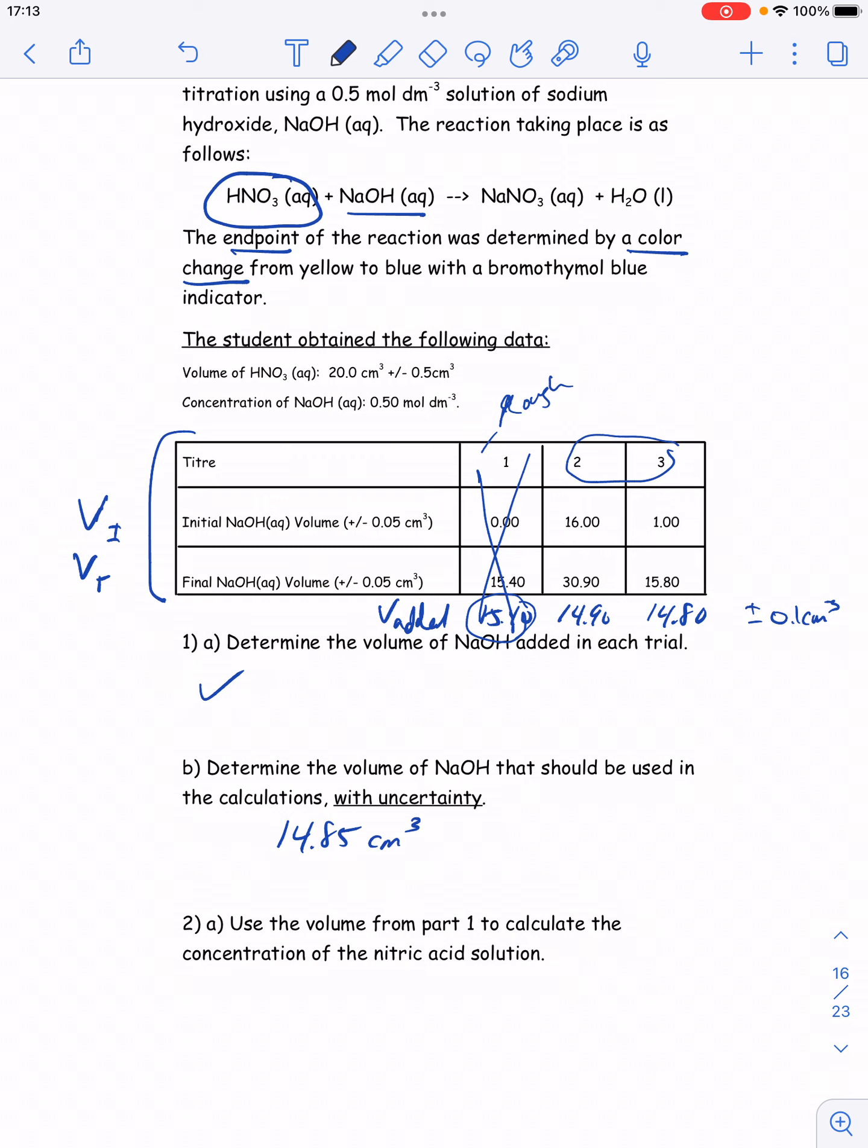Now, the uncertainty on my volume was 0.1. So if I carry that forward, then I actually need to round this volume off to 14.9 cm cubed plus or minus 0.1. So if I'm going to match my uncertainty, then I would use 14.9 as the actual volume.